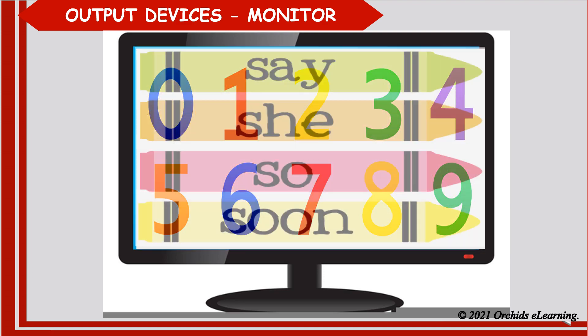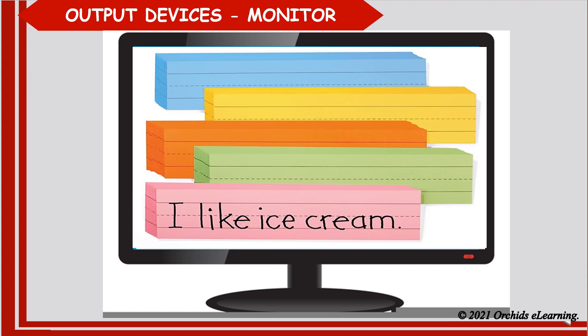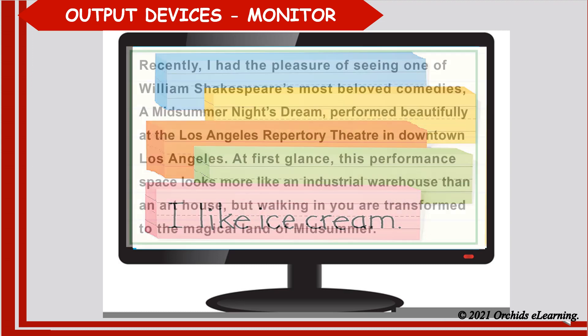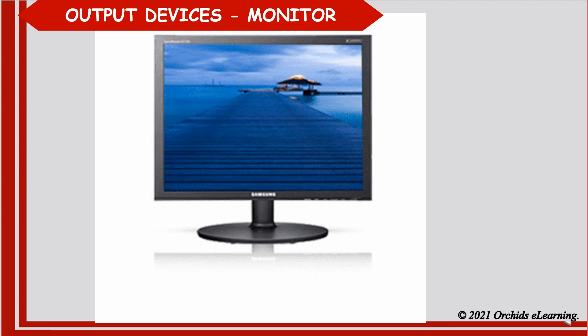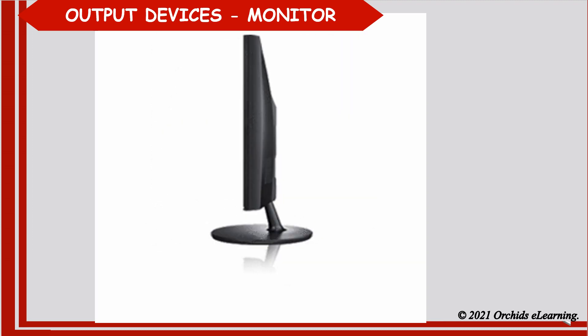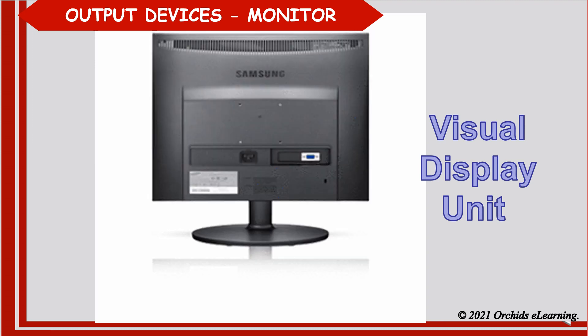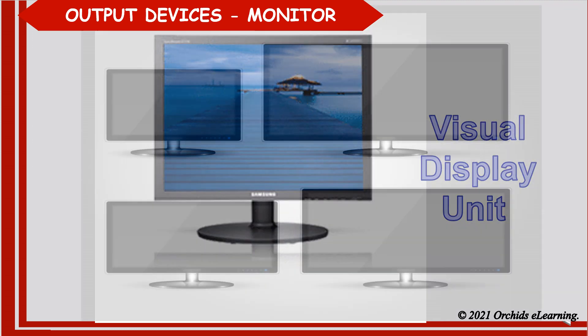Output devices. Monitor: a computer monitor looks like a television. You can see pictures, letters, numbers, words, sentences, or paragraphs on a monitor. The monitor is also known as VDU, which stands for Visual Display Unit. Monitors come in different sizes.